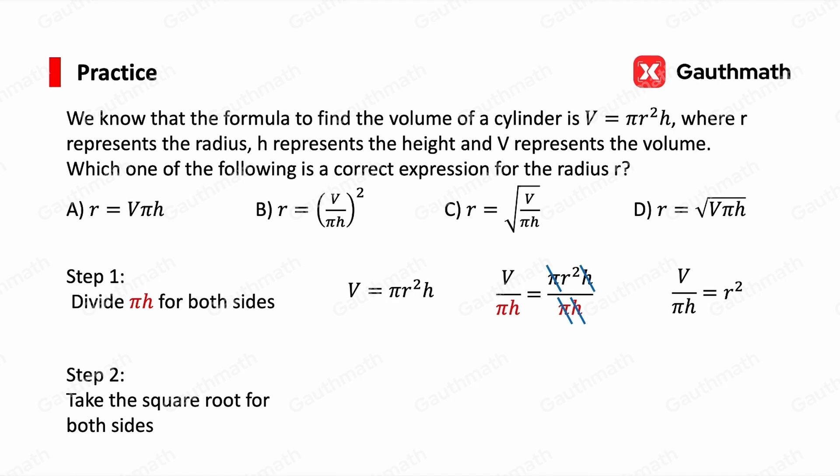The second step, take the square root of both sides. For the right-hand side, the square root of r² is r, because r is a positive number. So r = √(V/πh). The correct answer is C.